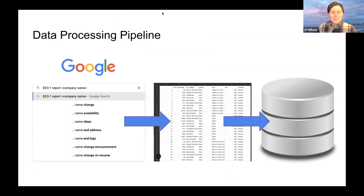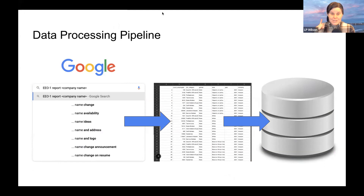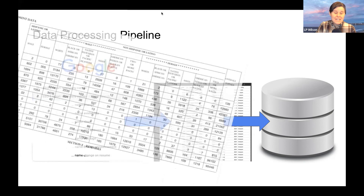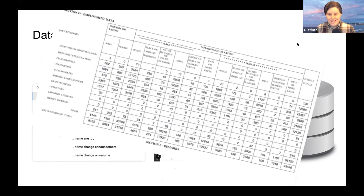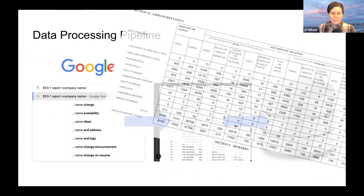We decided to use Equal Employment Opportunity reports — EEO1 reports — as our data source. Companies have been required to file these with the government since 1966. They're not required to make them public, but some have — often in the form of a PDF or even a PNG. I took personal offense to this, because those are the hardest formats for data analysts to work with.